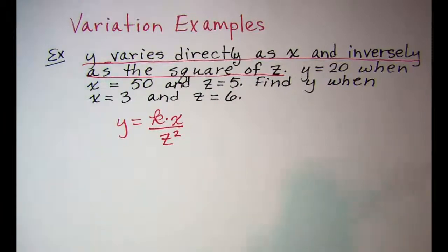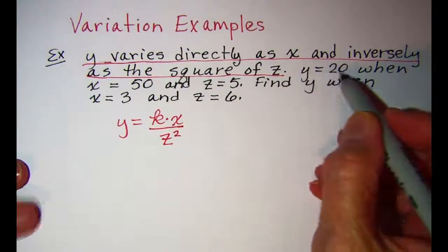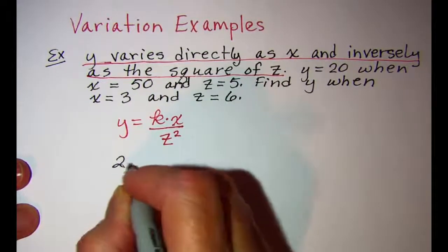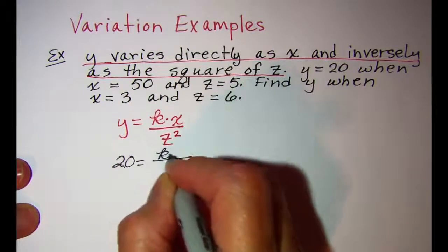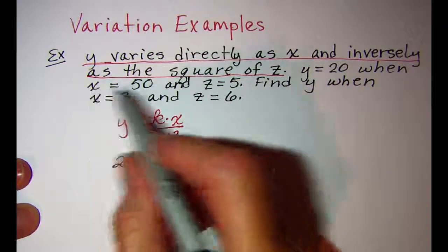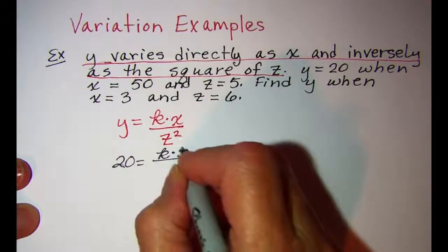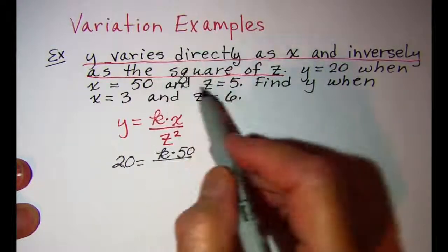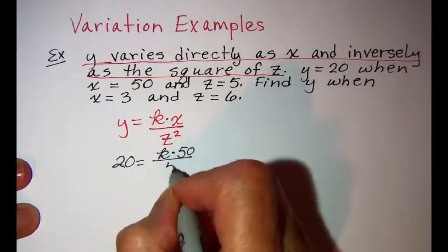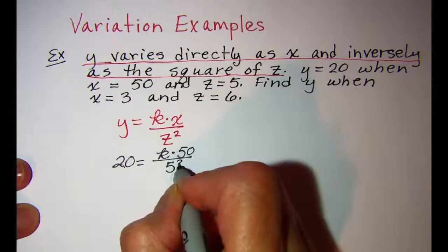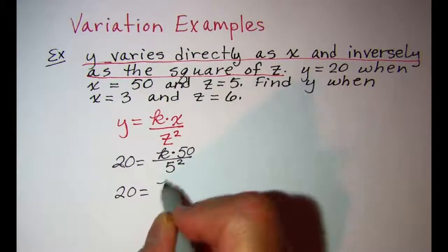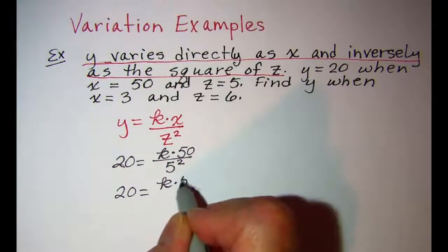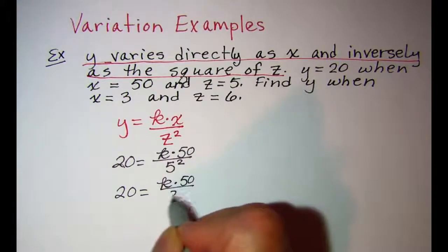Our next step is to plug in numbers that we're given. y is 20 when x is 50 and z is 5. I have 5 squared. 20 is equal to k times 50 over 25.